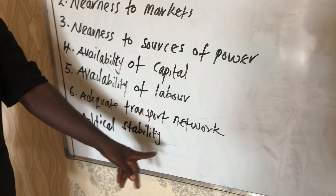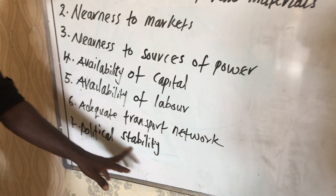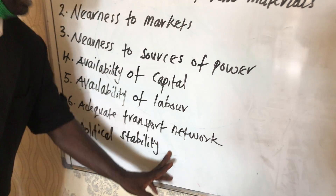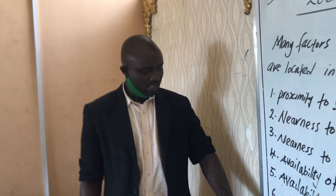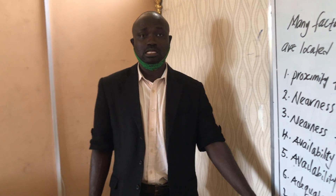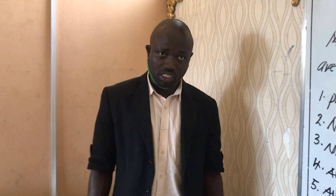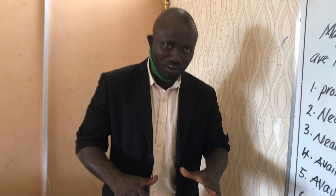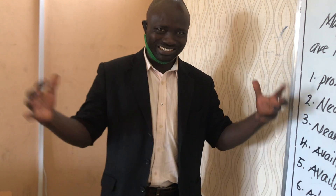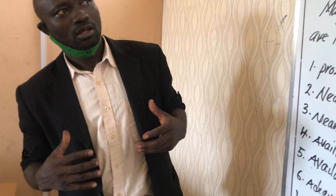The seventh factor is political stability — that is, stable governments. In a place where there is always political crisis or civil unrest, it will discourage industrial locations. But wherever there is stable government, it will attract industrial locations.